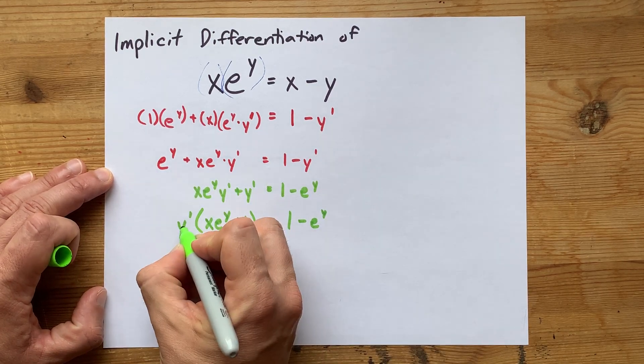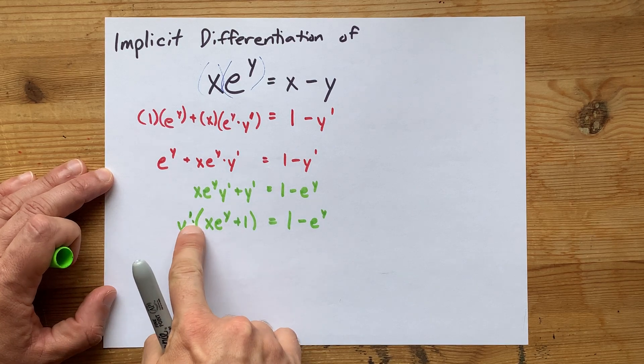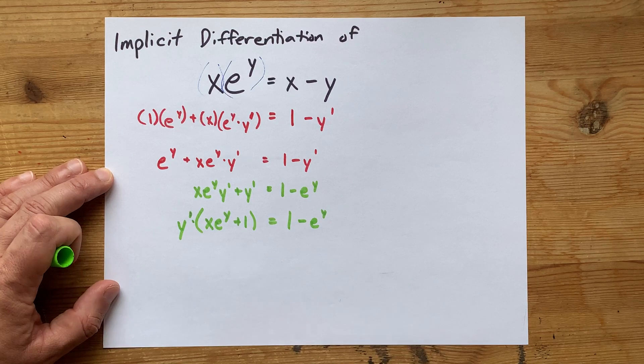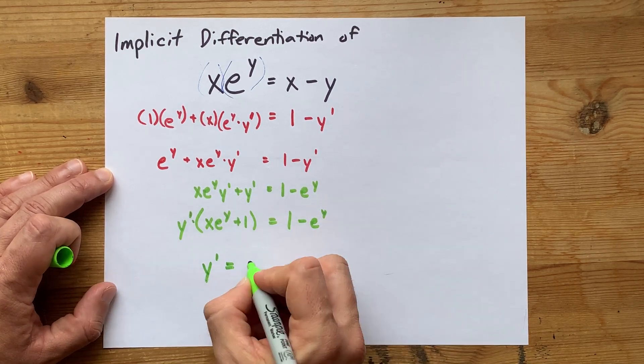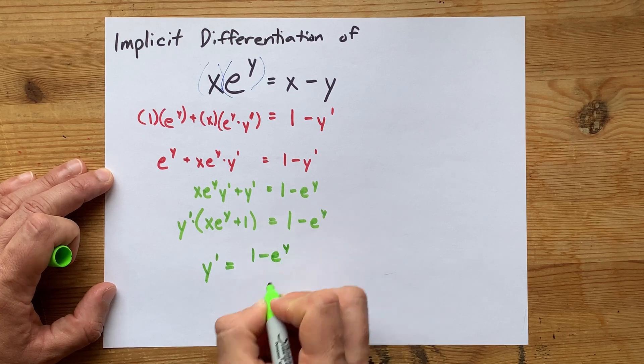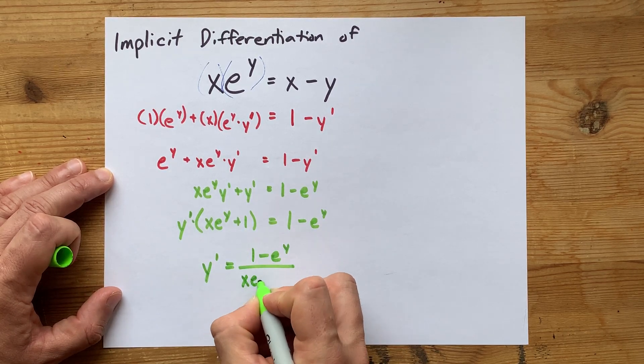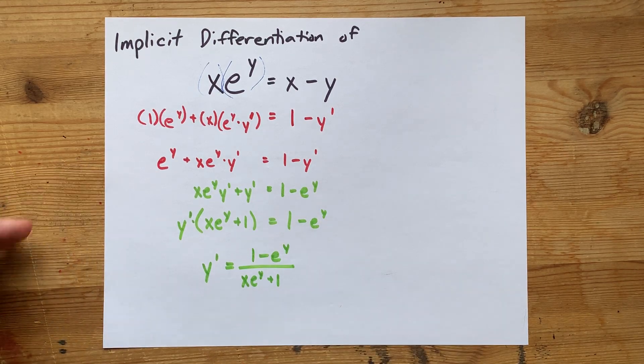And then, because this is factored out, this is multiplication, how do I undo multiplying by whatever this is? The answer is divided out on the other side. So, y prime isolated is 1 minus e to the y, all divided by x times e to the y plus 1. Wow. Just beautiful.